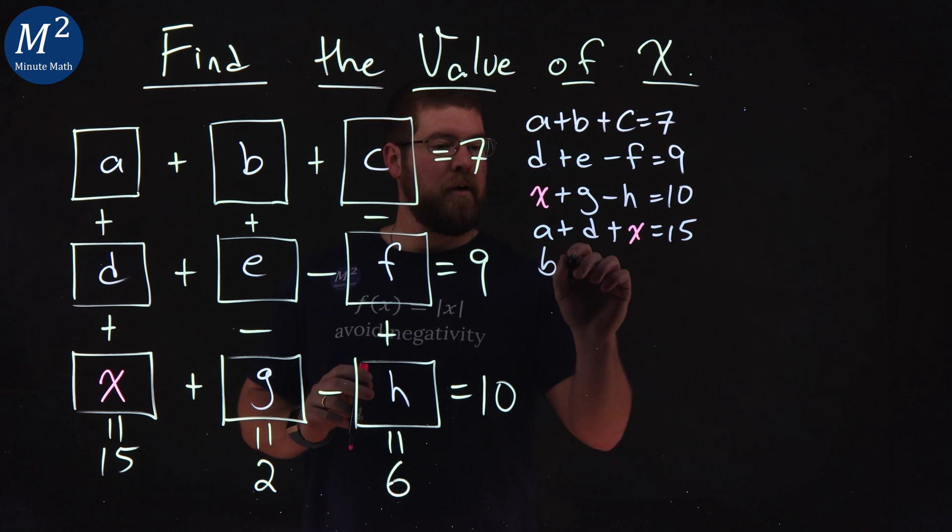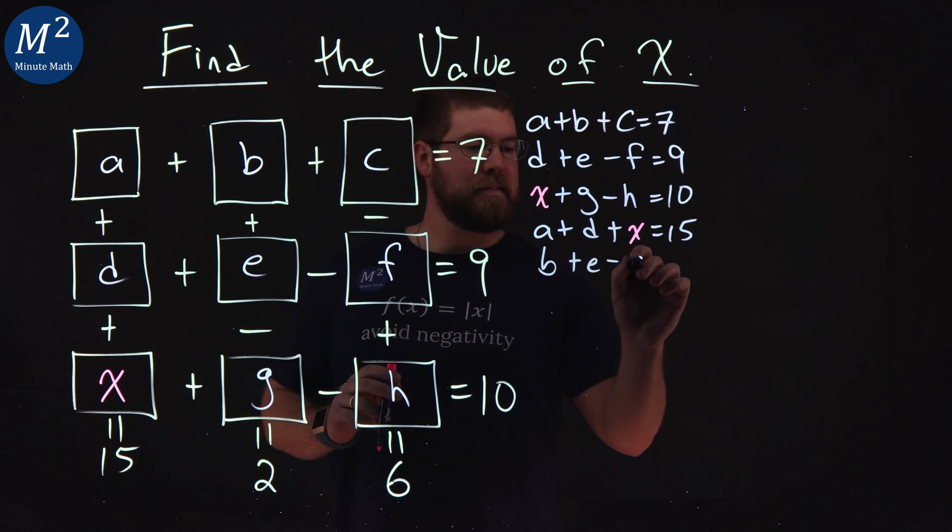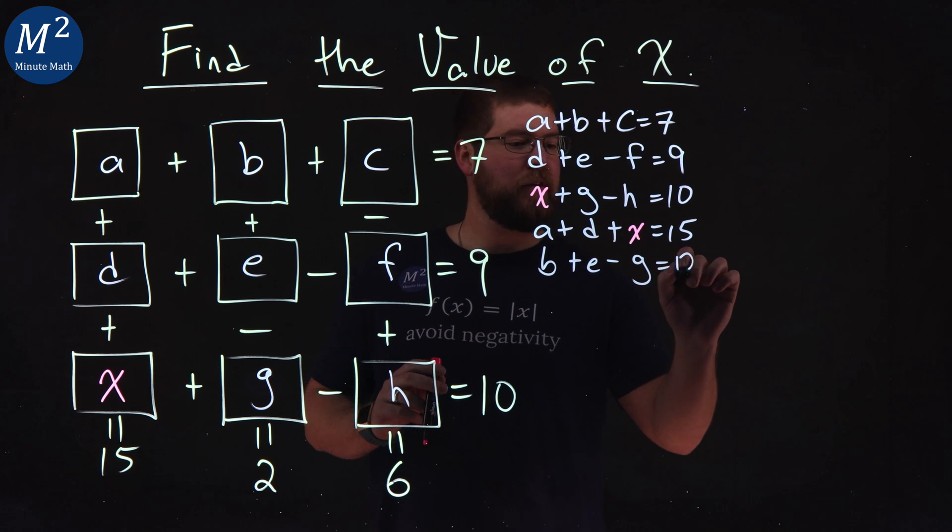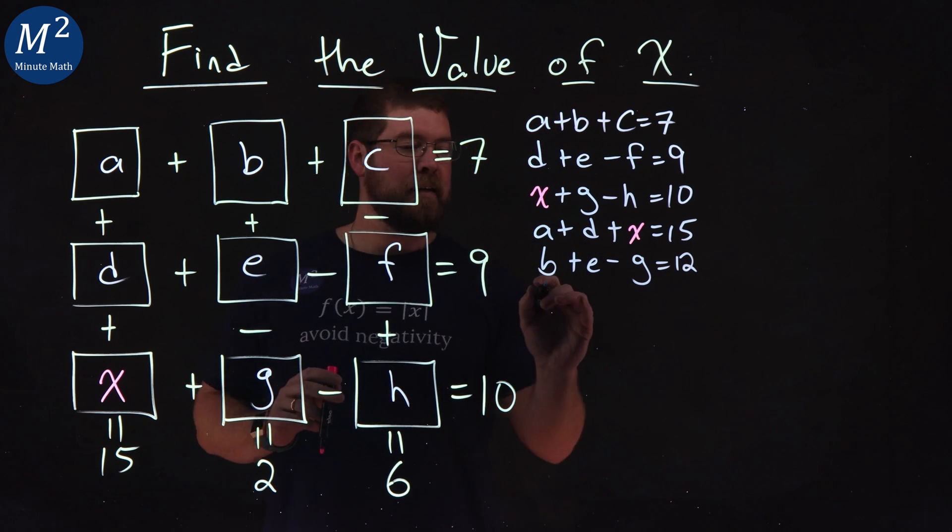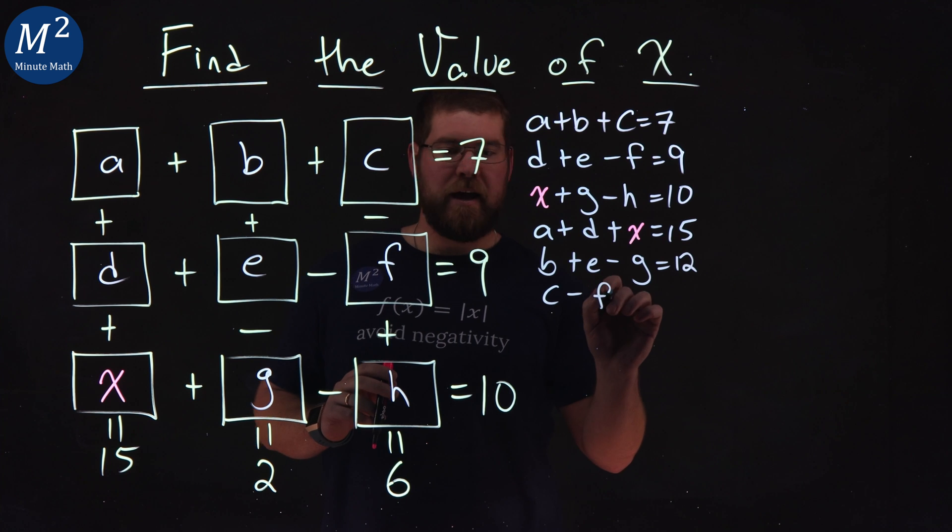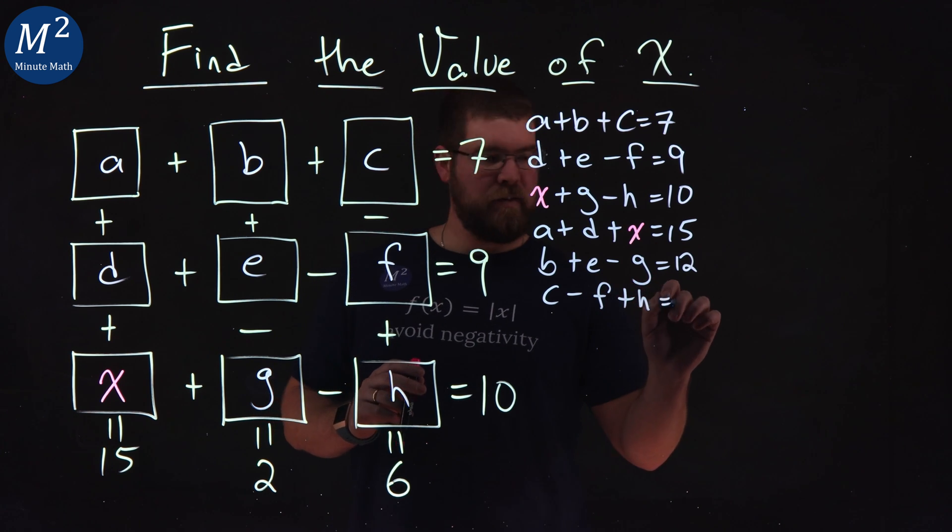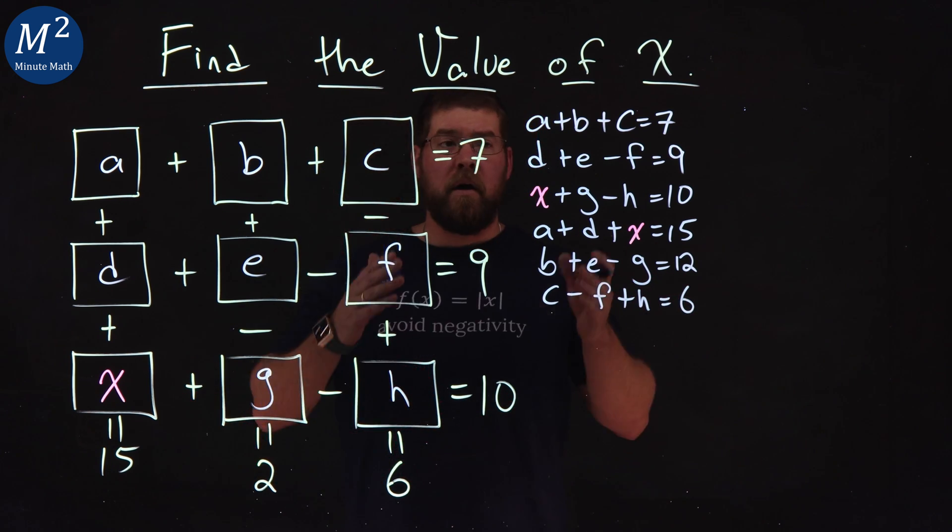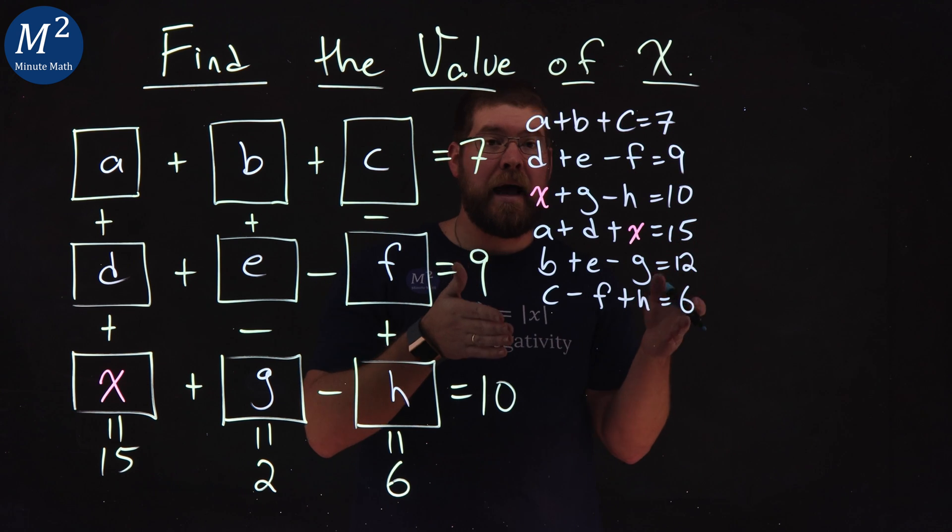And keep on going. B plus E minus G is equal to 12. Can't forget any of them here. And lastly, C minus F plus H is equal to 6. All right, we have them all listed out.